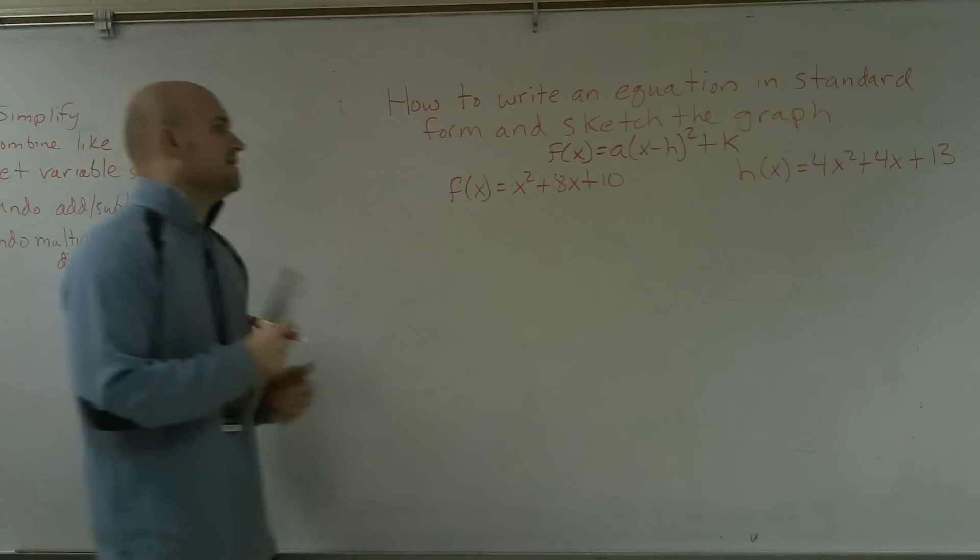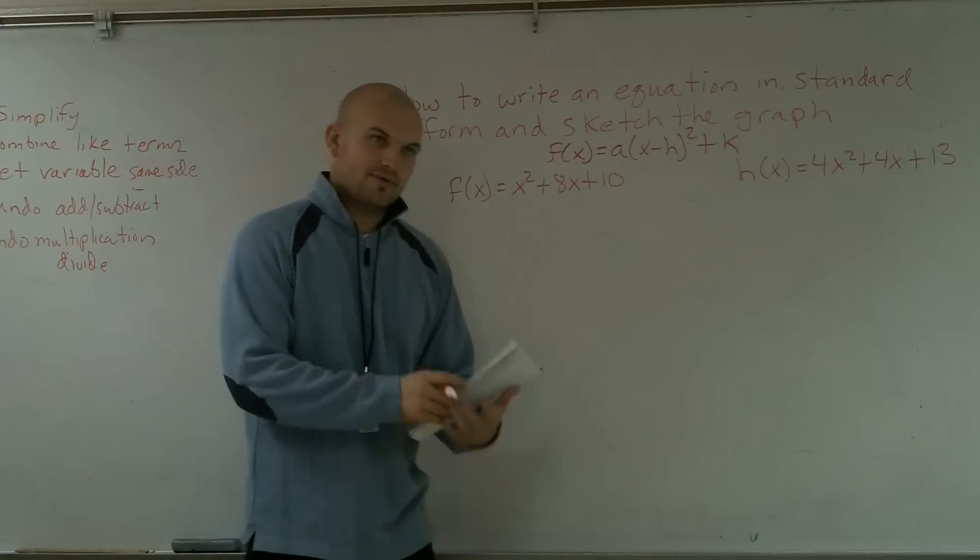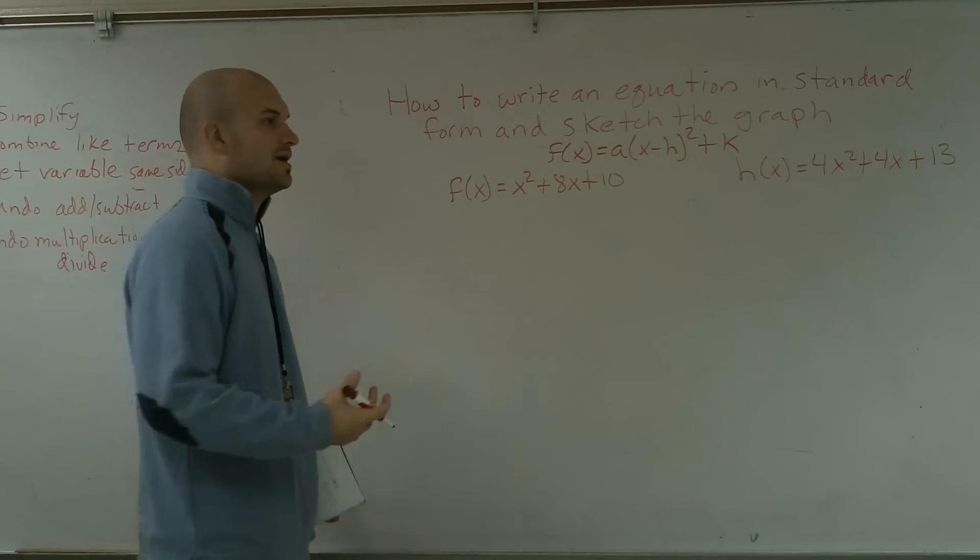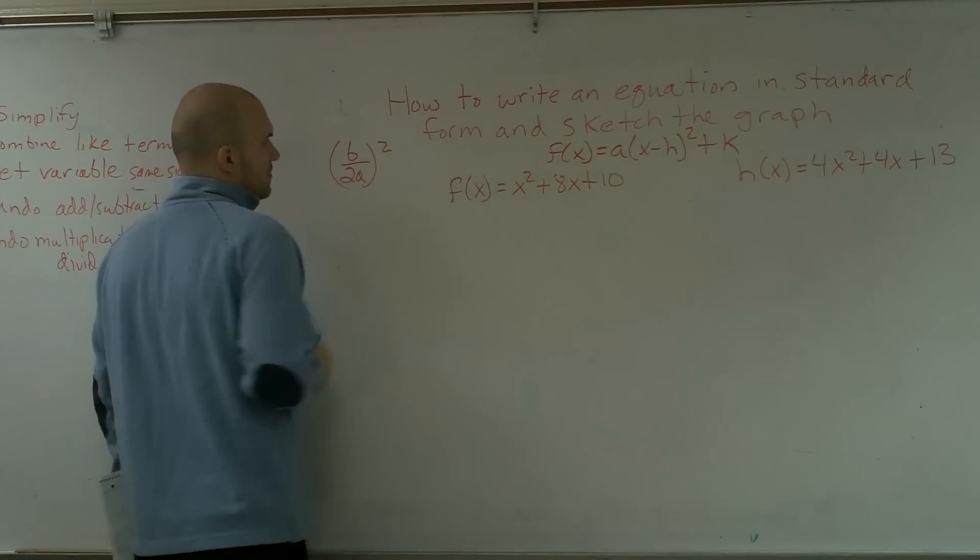So what we need to do is figure out how are we going to get this x squared there? And we get that by completing the square. And remember, the big important thing by completing the square is we have to remember our b over 2 squared.